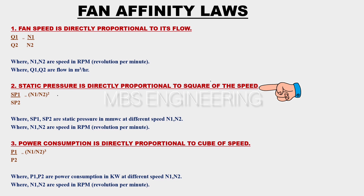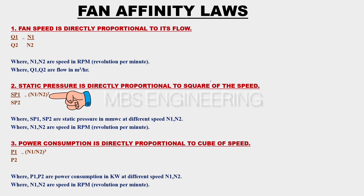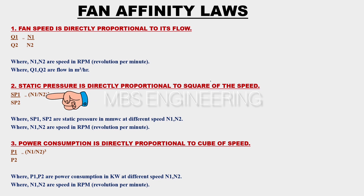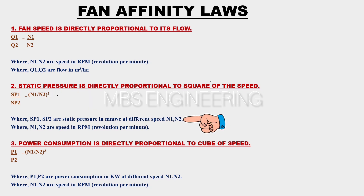The second affinity law for fans: static pressure is directly proportional to the square of the speed. The static pressure SP1 divided by SP2 is directly proportional to the square of speed N1 divided by N2. Where SP1 and SP2 are static pressure in MMWC at different speeds N1 and N2.